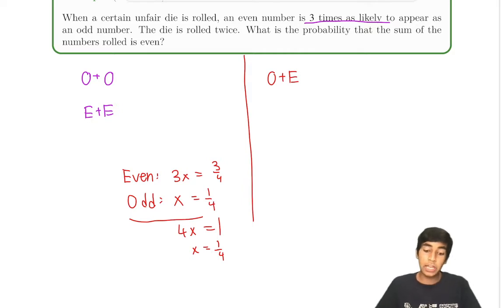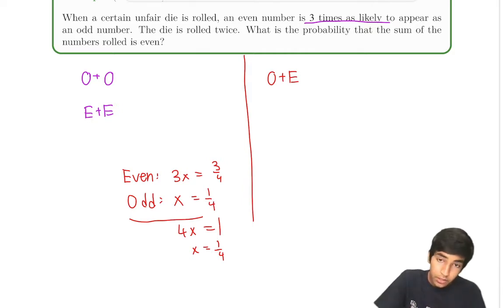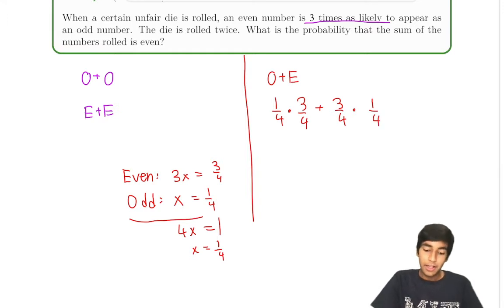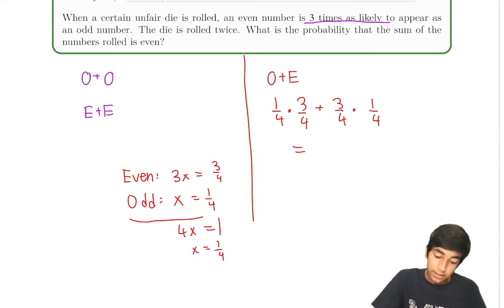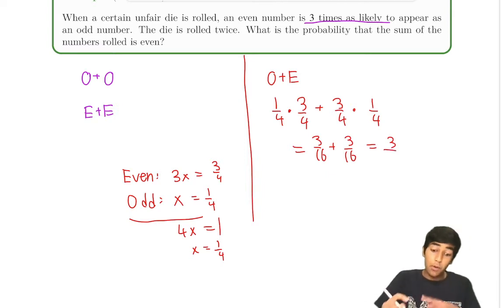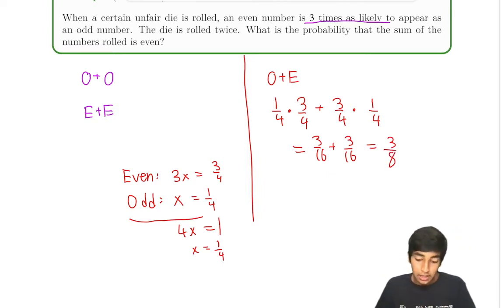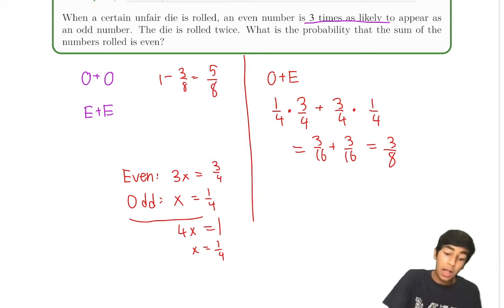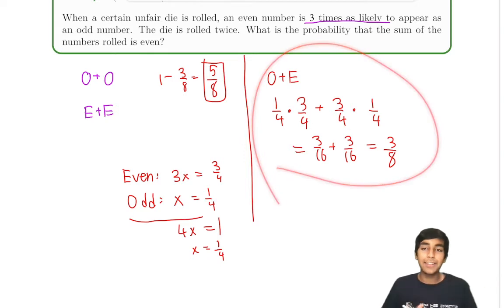What's the probability of rolling an odd number then an even number? One-fourth times three-fourths. What's the probability of rolling an even number then an odd number? Three-fourths times one-fourth. Summing these: three over sixteen plus three over sixteen equals three over eight. But remember, we're doing complementary counting — these are the cases that don't work. So we do one minus three-eighths equals five-eighths. This is the probability the sum will be even. Five-eighths is our answer.